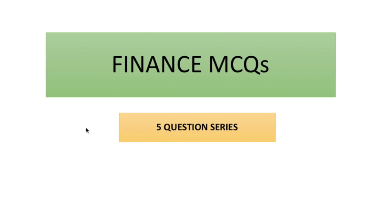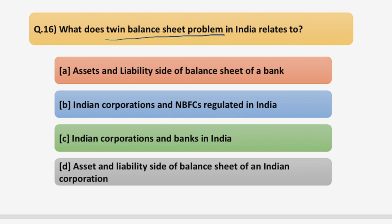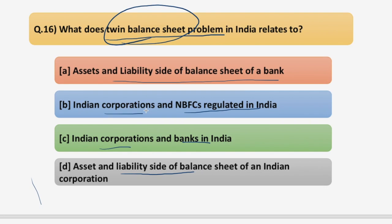Starting with the first question: what does the twin balance sheet problem in India relate to? The four options are: (A) asset and liability side of balance sheet of a bank; (B) Indian corporations and NBFCs regulated in India; (C) Indian corporations and banks in India; (D) asset and liability side of balance sheet of an Indian corporation. To answer this, we need to understand what the twin balance sheet problem exactly means.